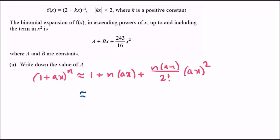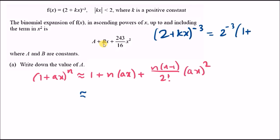Rewrite (2 plus kx) to the negative 3 by factoring out 2 to the negative 3: equals 2 to the negative 3 times (1 plus kx over 2) to the negative 3. Here, a equals k over 2 and n equals negative 3. The expansion is multiplied by 2 to the negative 3, which is one eighth.